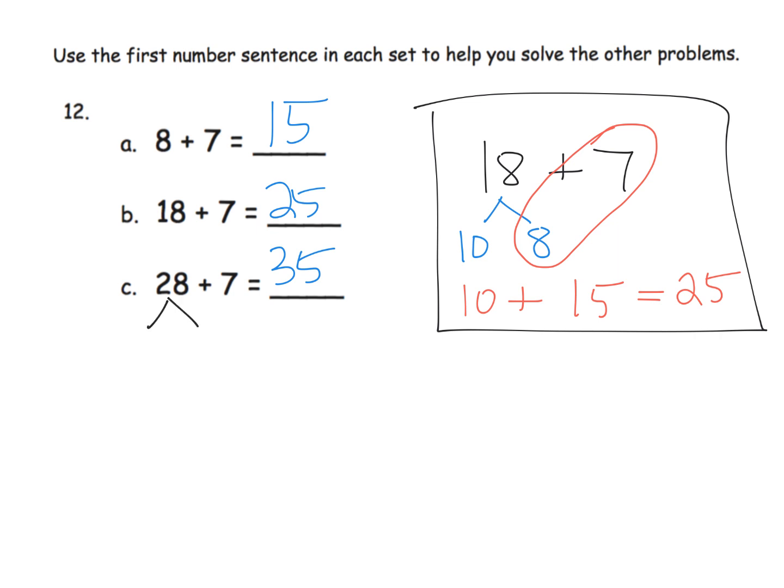Also, just to recap right here, another way to think of this is to take that 28, decompose it to be 20 and 8, add our 8 and 7, that gives us 15, plus the 20 way up in the front, and that gives us 35.